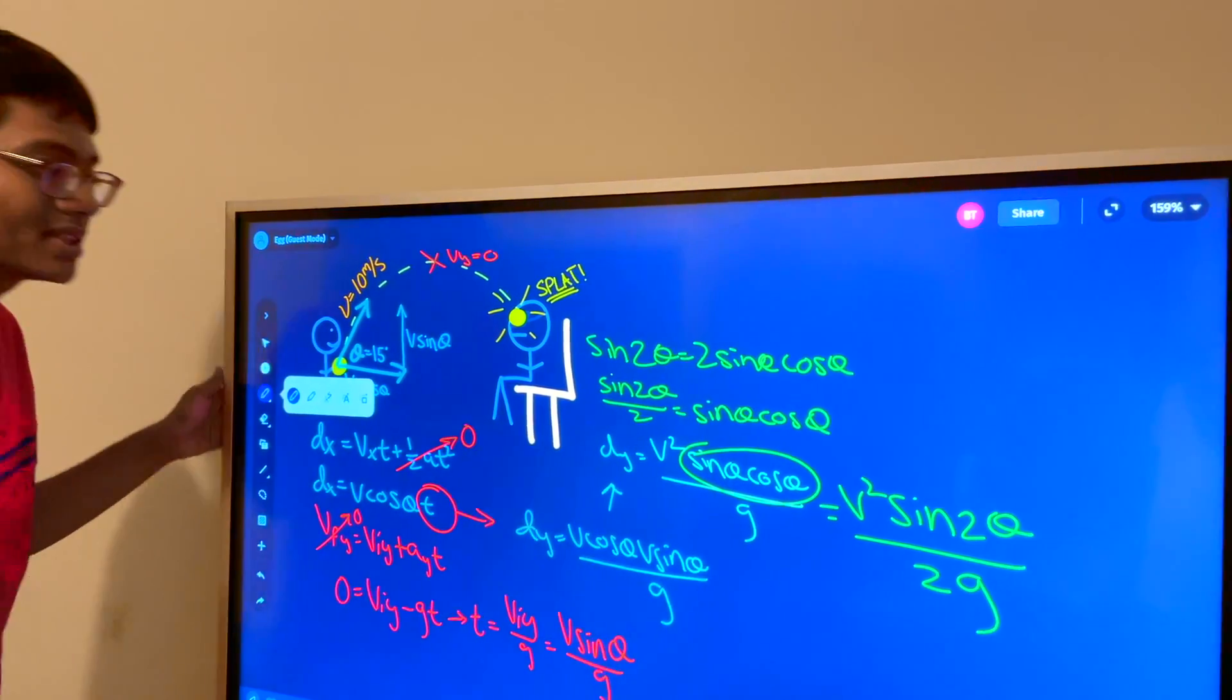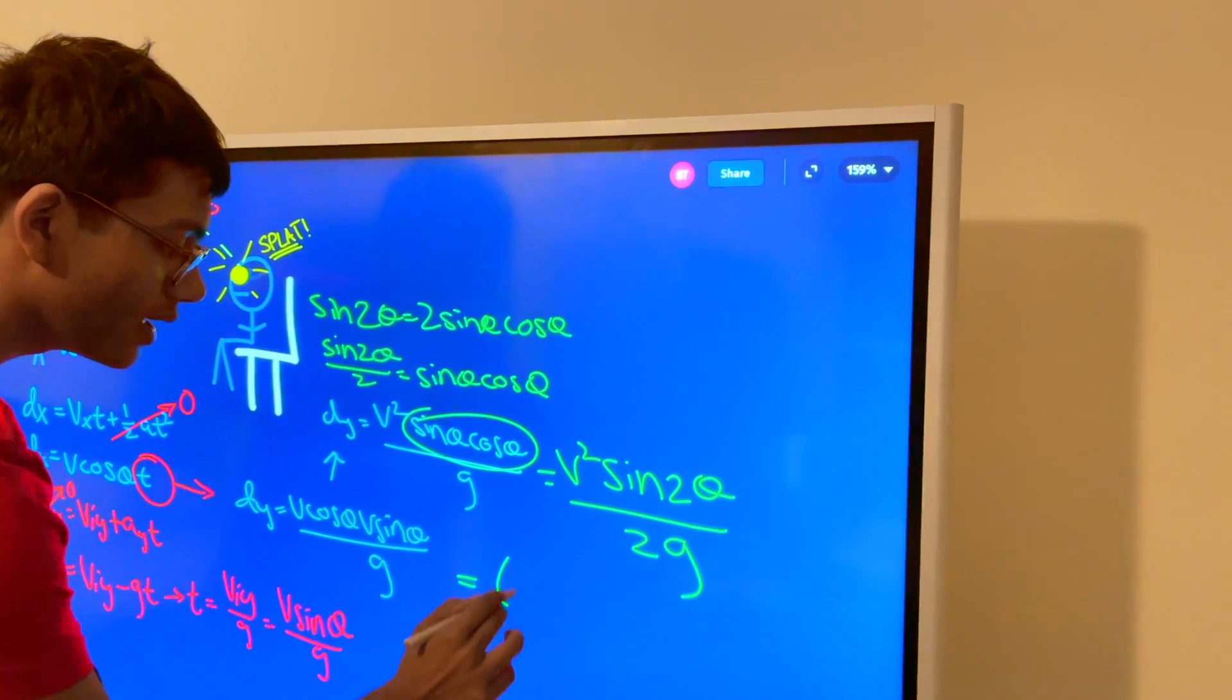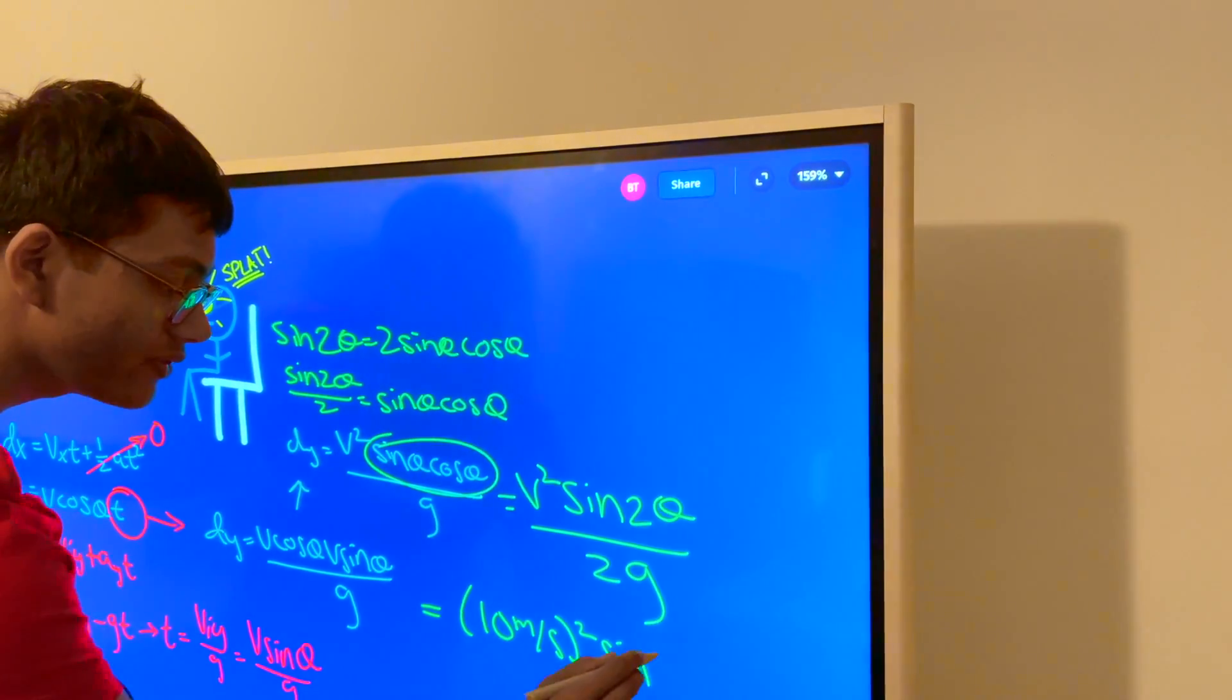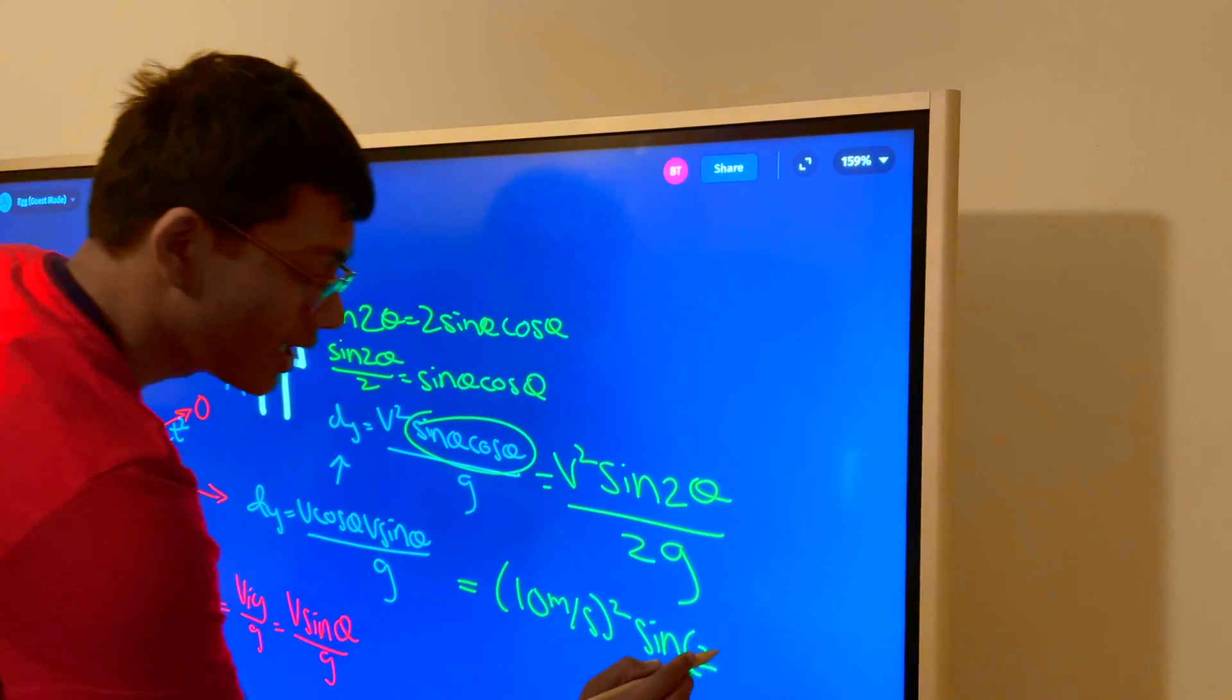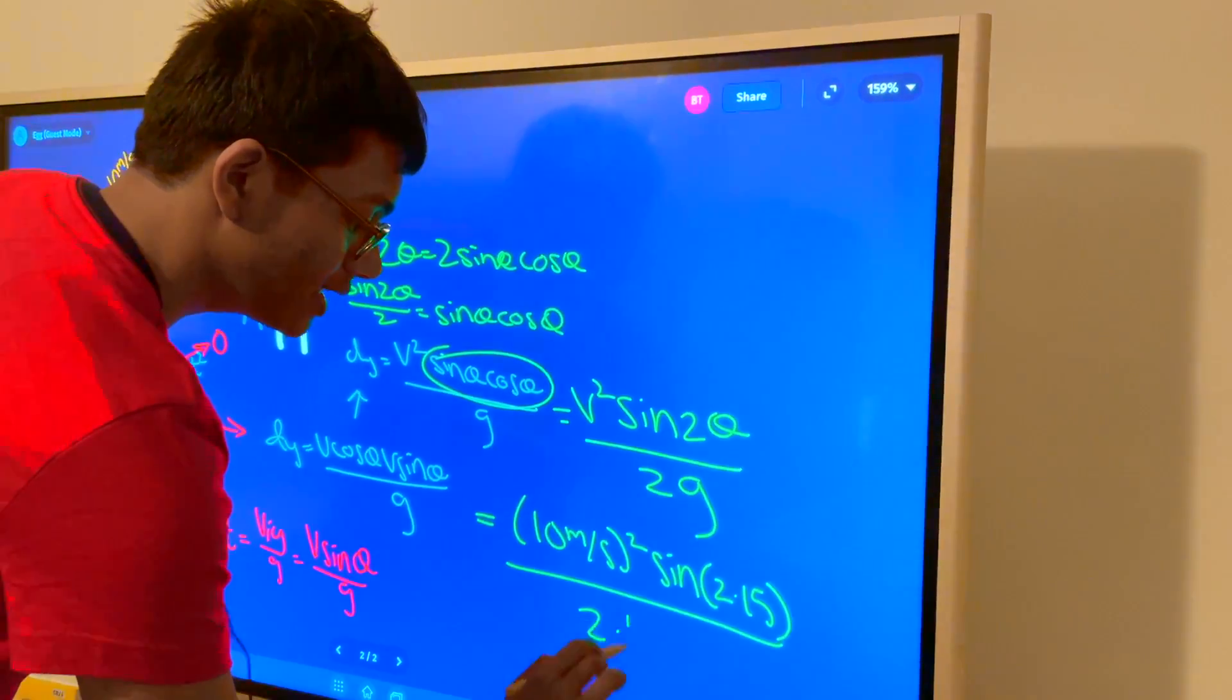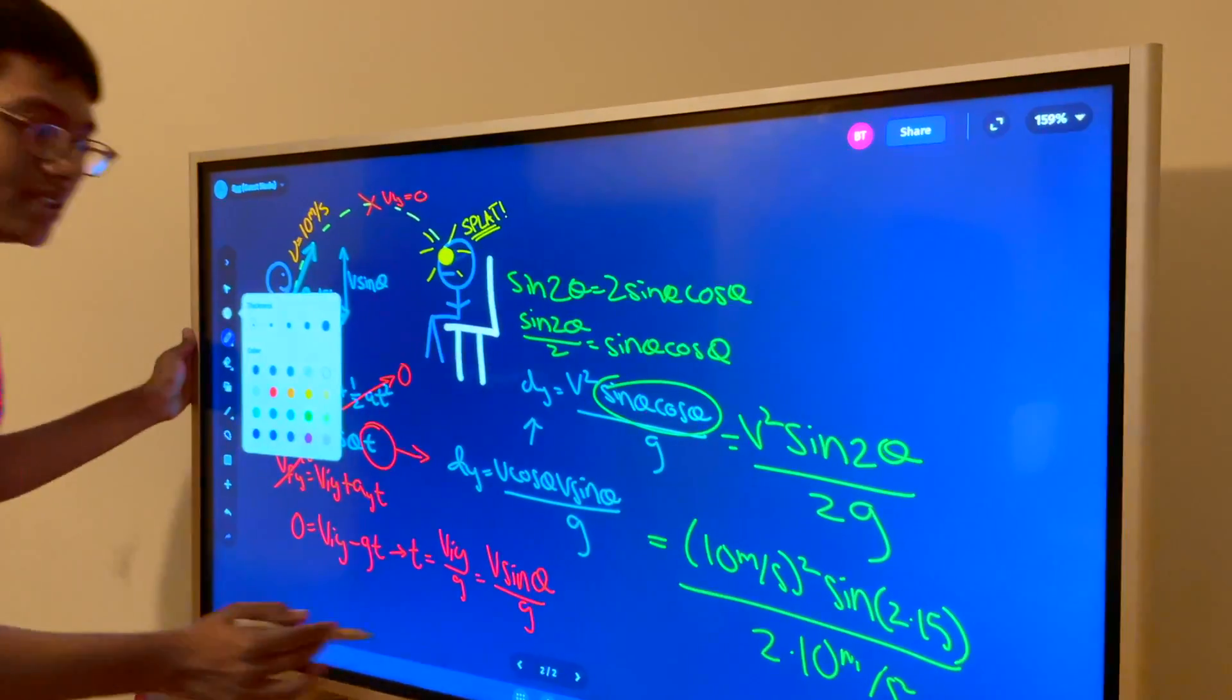If I know that v is equal to 10 I know that v² is going to be what? It's going to be 10 meters per second squared. Okay and what about sin(2θ)? Well theta remember is going to be 15. So 2 times 15. Divide that by my g. That's going to be 10. We're going to approximate that. Cancel these out.